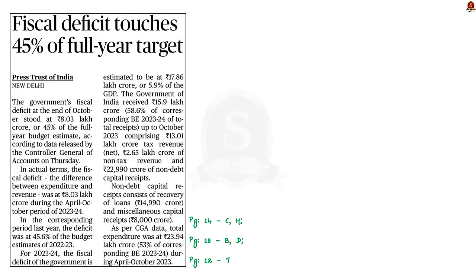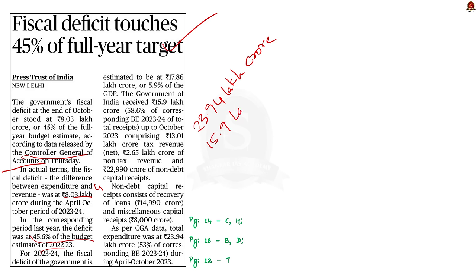This news article talks about India's fiscal deficit according to recent data published by the Comptroller General of Audits. The government's fiscal deficit at the end of October stood at 8.03 lakh crore rupees, or 45% of the full year budget estimate. Total expenditure was 23.94 lakh crore rupees and total receipts was 15.9 lakh crore rupees. Today, we shall focus on the fiscal deficit.